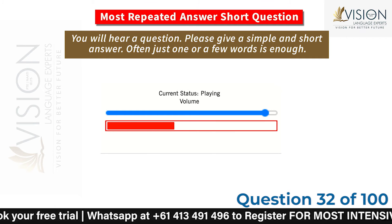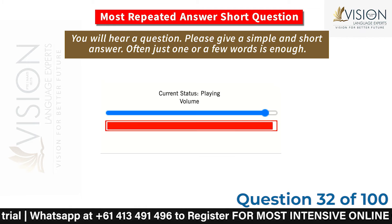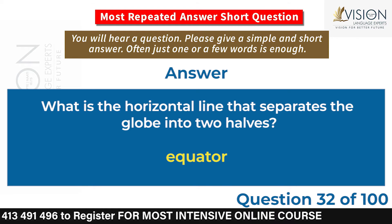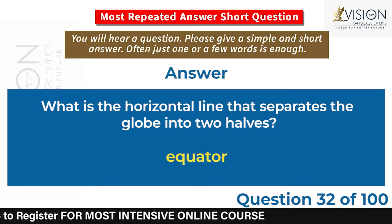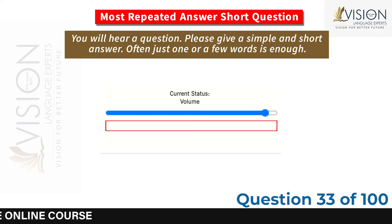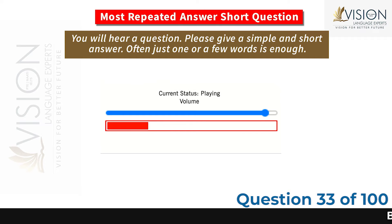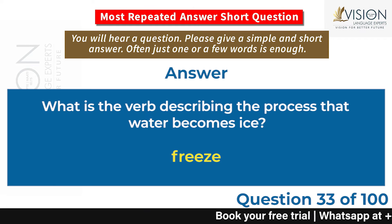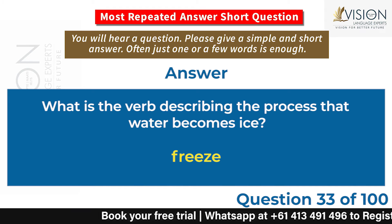What is the horizontal line that separates the globe into two halves? Equator. What is the verb describing the process that water becomes ice? Freeze.